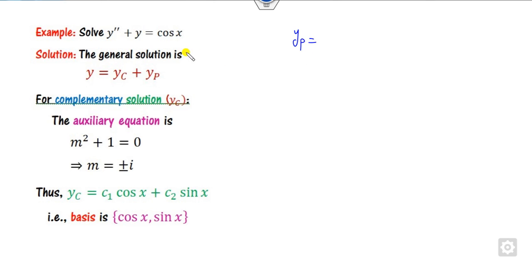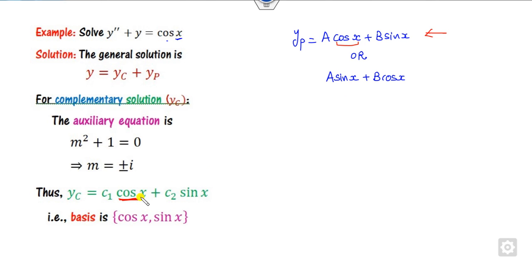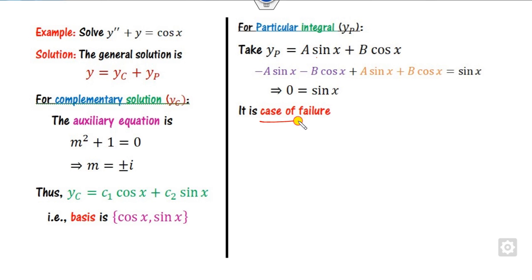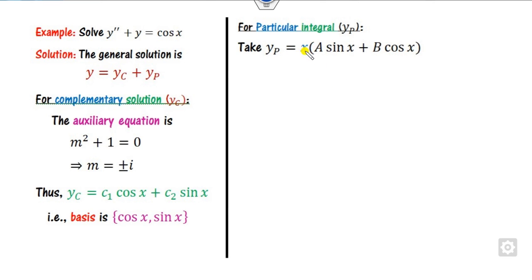For yp, since the RHS involves cos(x), you would initially take yp = A cos(x) + B sin(x). However, cos(x) and sin(x) already appear in yc — this is the case of failure. Whenever there is a case of failure, you must multiply yp by x. So the new trial solution becomes yp = Ax sin(x) + Bx cos(x). Check: x sin(x) and x cos(x) do not appear in yc, so this modified form will work.